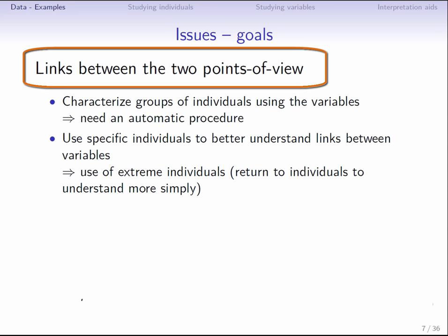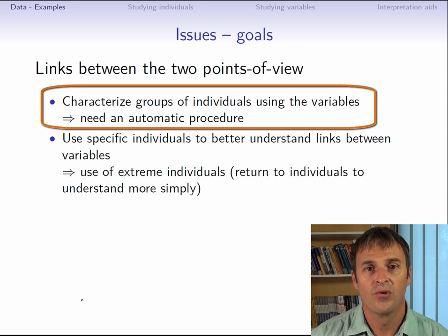When studying individuals, we can build groups of individuals, but then we want to characterize these groups, and to do this, we would like to use the variables. For instance, we would like to be able to say that certain products are similar because they are acidic and bitter, whereas others are similar because they are sweet. So for this, we need an automated method, especially if we have a lot of variables.